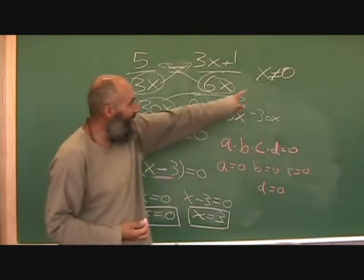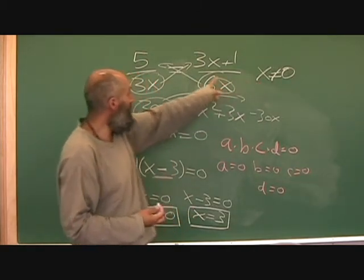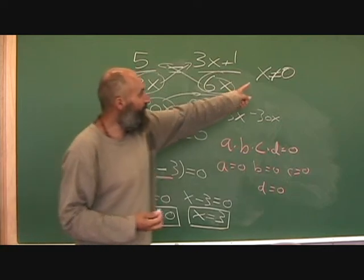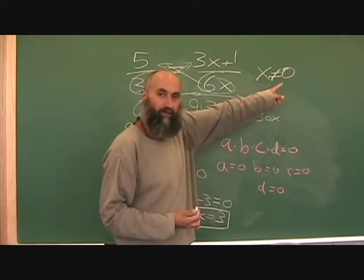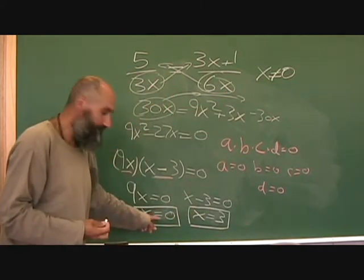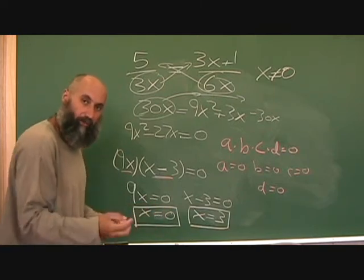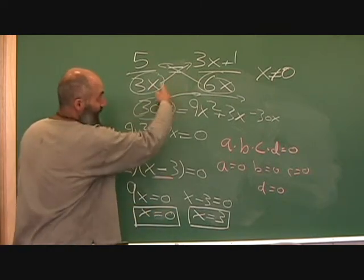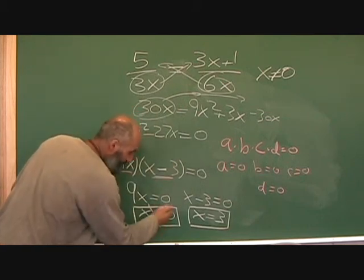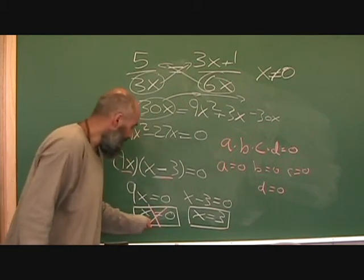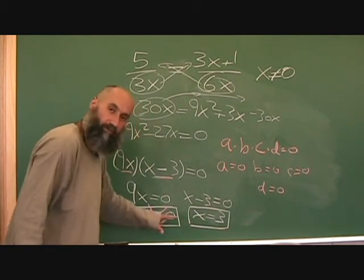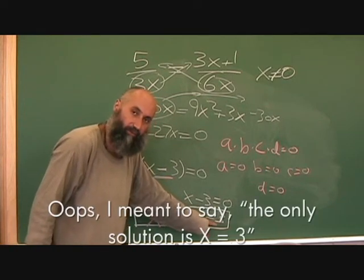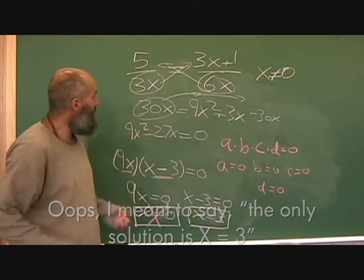We have two solutions, but we really only have one, because we have to look at our restriction set up at the beginning of the equation. Our restriction said x cannot equal zero. So x = 0 is eliminated — it doesn't exist. The only valid solution is x = 3.